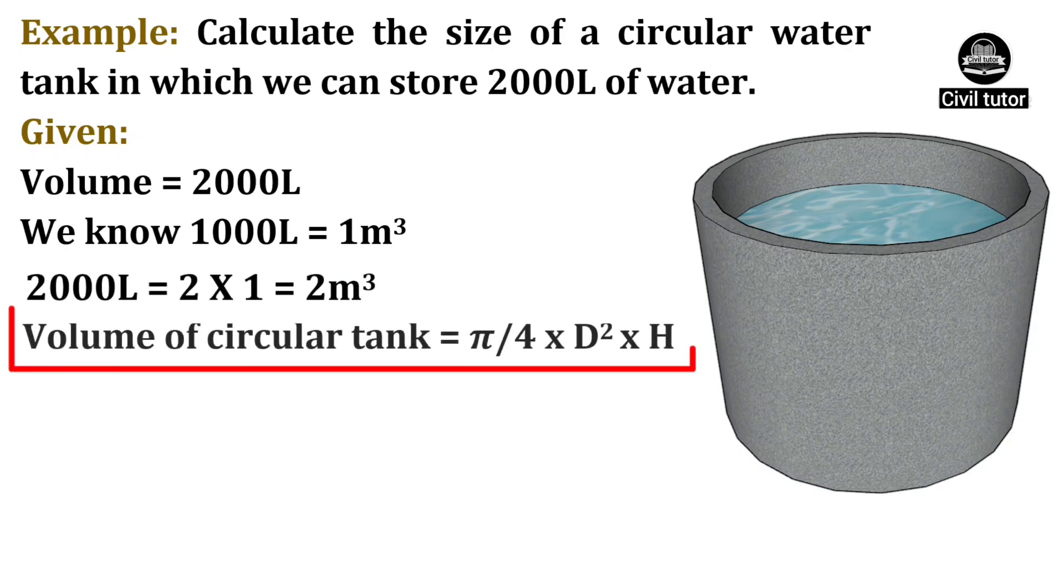Volume of circular tank is given by pi by 4 d square into h. Both the dimensions, diameter and height, are unknown. So, we need to assume at least one variable, either diameter or height, to decide the size of tank. It depends on the availability of space required for casting the water tank. If the site area is not sufficient enough to accommodate a particular diameter, then we can reduce the diameter by increasing the height of tank and vice versa.